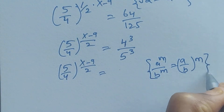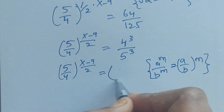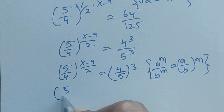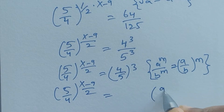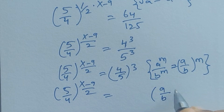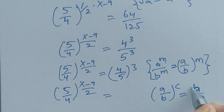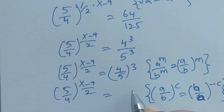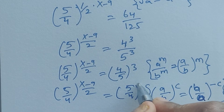This is the formula — we know this formula and I am going to use it here. So (4/5) to the power of 3. We have (5/4) to the power of (x minus 9) divided by 2 equal to (a/b) to the power of m. So this becomes (5/4) to the power of minus 3.